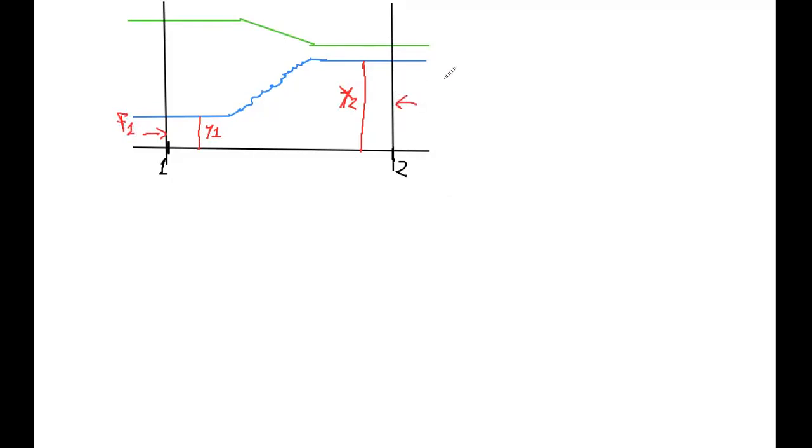And now we write the balance of momentum. It says that summation of forces F1 minus F2 equals rho Q times V2 minus V1, mass times velocity.